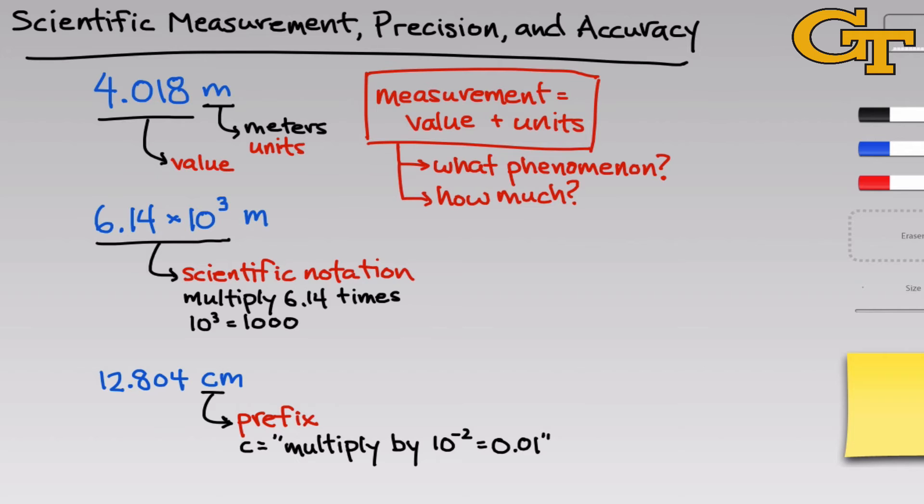You should notice that the instruction dictated by c is very similar to the times 10 to the third that we saw above. In fact, we can think of scientific prefix as really scientific notation in disguise. We're taking that times 10 to the third, and instead of writing that out, we're using a prefix that represents a more compact form of that instruction to multiply by some power of 10.